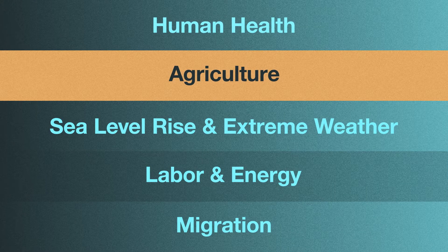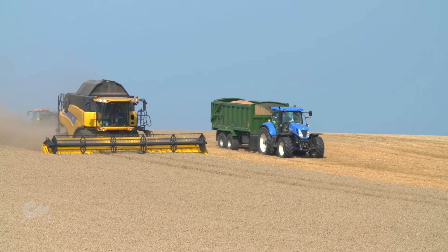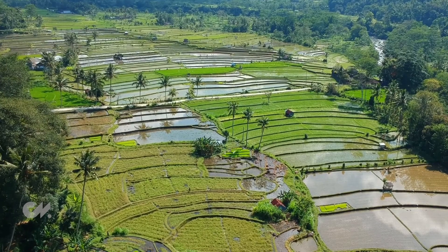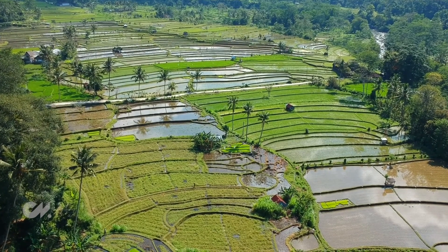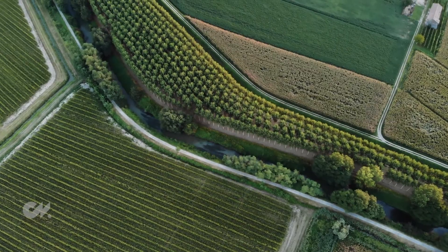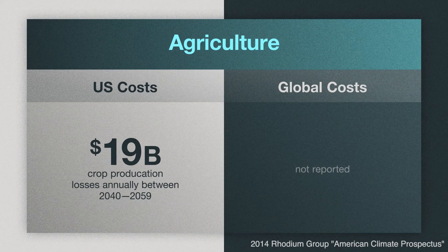Agriculture. How much will it cost to adjust agricultural practices to withstand the impacts of climate change and meet the nutritional demands of a growing global population? Farmers are by necessity highly adaptive — the weather has never been constant. But as extreme weather events become the norm, it'll be more difficult for them to adapt based on historical patterns. Scientists predict that by 2040, we will see approximately $19 billion in losses in crop production annually.